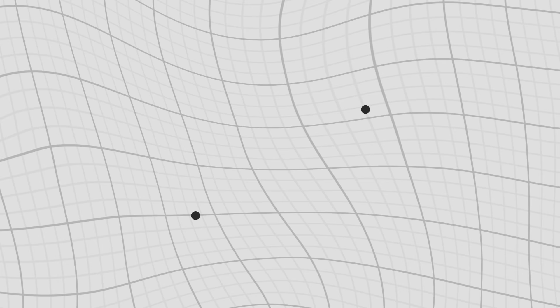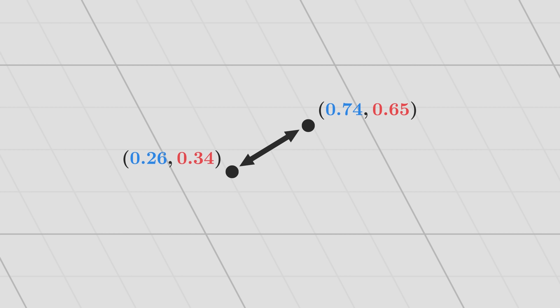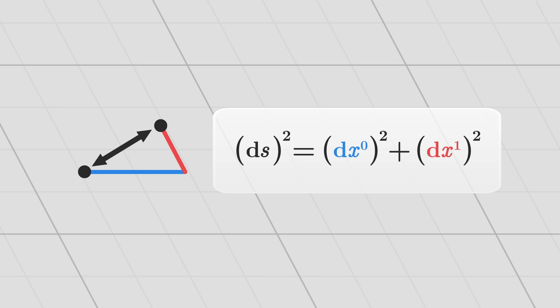To do this, imagine two points on the sheet, very close to each other. Knowing their coordinates, we wish to express the distance between these points. At first glance, we could think of the Pythagorean theorem. Calling dx^0 and dx^1 the differences in coordinates between the two points, we might write the square of the distance as the sum of the squares of both sides.